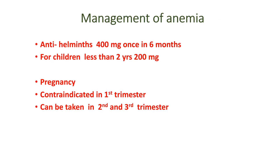Now we come to the management of anemia, where we start with anthelmintics. The drug of choice is tablet albendazole 400 mg once in 6 months. For children less than 2 years, we give 200 mg. In pregnancy it is contraindicated during the 1st trimester and can be taken in the 2nd and 3rd trimesters.